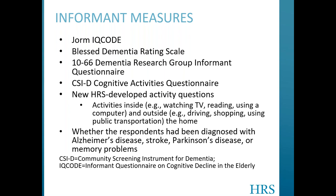The informant questionnaire included the JORM Informant Questionnaire on Cognitive Decline in the Elderly (JORM IQ Code), the Blessed Dementia Rating Scale, the 1066 Dementia Research Group Informant Questionnaire, the Community Screening Instrument for Dementia Cognitive Activities Questionnaire, and new HRS-developed activity questions including activities inside such as watching TV, reading, and using a computer, and outside such as driving, shopping, and using public transportation. The informant interview also asked whether the respondents have been diagnosed with Alzheimer's disease, stroke, Parkinson's disease, or memory problems.